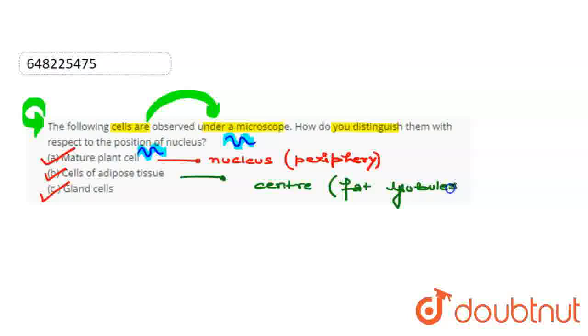And if we talk about gland cells, the nucleus is present at the bottom of the cell.